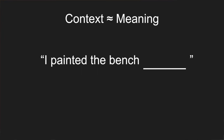Pretty much every word embedding algorithm uses the idea of context. To show you what I mean, I'll give you a really simple example. Here is a sentence where there's a word missing: 'I painted the bench ___.' We're expected to fill in the blank. The obvious thing is to put a color—'I painted the bench red,' 'I painted the bench green,' something like that.